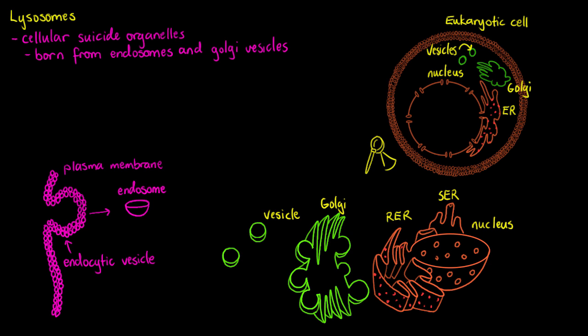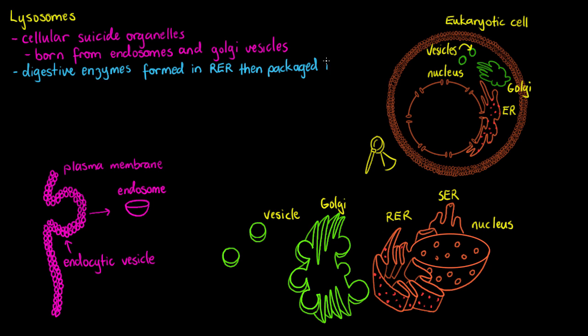We have our endosome and the vesicle from the Golgi apparatus, which will eventually form the lysosome. But where do the actual digestive enzymes come from that perform the work of the lysosome? The digestive enzymes are formed within the rough endoplasmic reticulum from amino acid chains created by the ribosomes studding the endoplasmic reticulum.